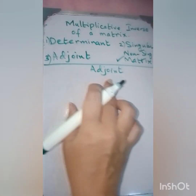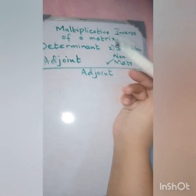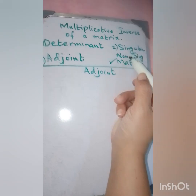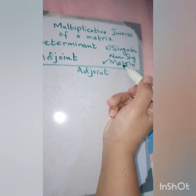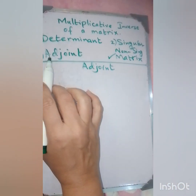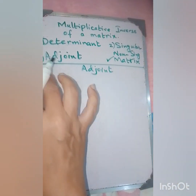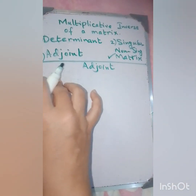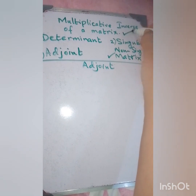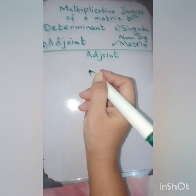These are all the components of the multiplicative inverse of a matrix: the determinant, checking for singular or non-singular, and the adjoint. By applying these steps we can find the multiplicative inverse. Next, let's look at the adjoint of a square matrix.